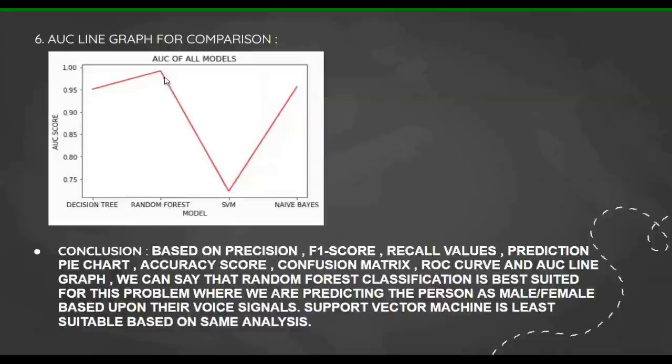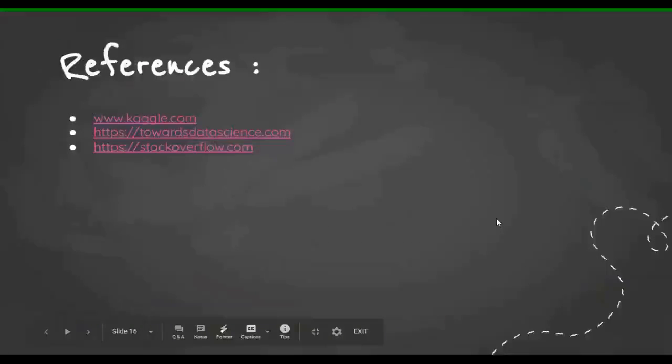So the conclusion: based on precision, F1 score, recall values, prediction pie chart, accuracy score, confusion matrix, ROC curve, and AUC line graph, we can say that random forest classification is best suited for this problem where we are predicting the person as male or female based upon their voice signals. Support vector machine is least suitable based on same analysis. This was the end for my presentation. Here are the references: Kaggle, data science, and Stack Overflow. These things have helped me do this project. My presentation is over, now I'll show you the implementation.